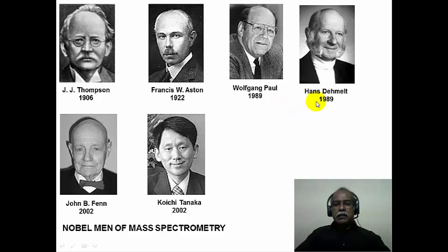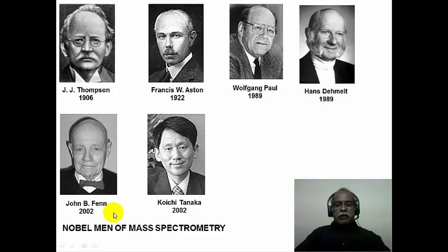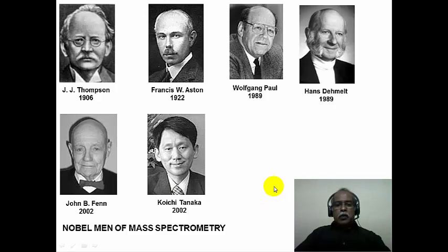Wolfgang Paul and Hans Dempster shared the Nobel Prize in 1989. Both worked on the ion trap method of mass spectrometry, known as ion cyclotron resonance mass spectrometry. Recently in 2002, John Fenn and Koichi Tanaka shared the Nobel Prize for their respective discoveries of electrospray ionization mass spectrometry by Fenn and MALDI mass spectrometry by Tanaka. Mass spectrometry has had its own share of Nobel laureates who made seminal contributions in this area.